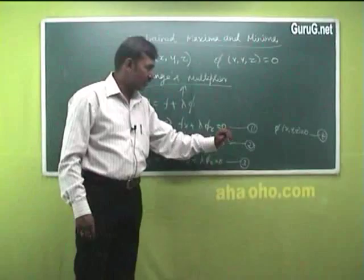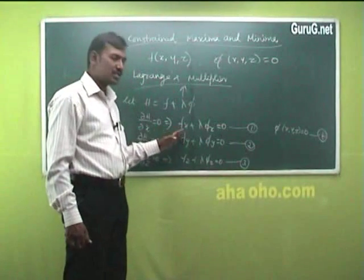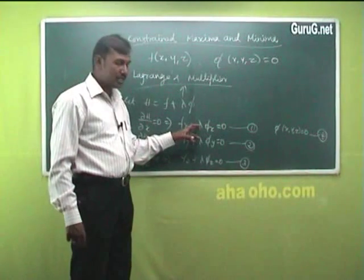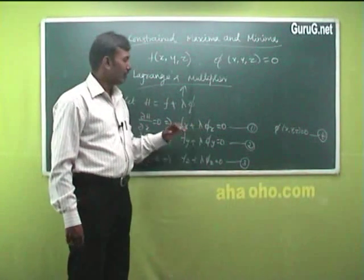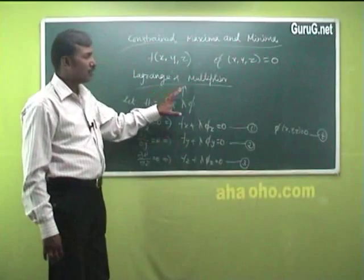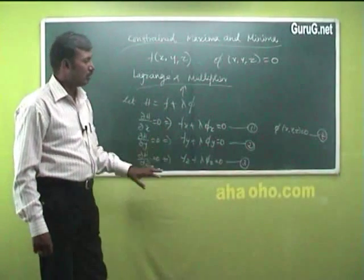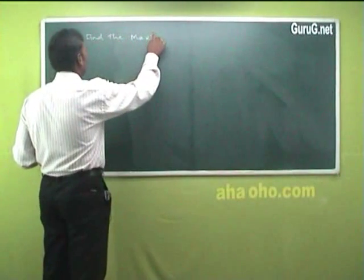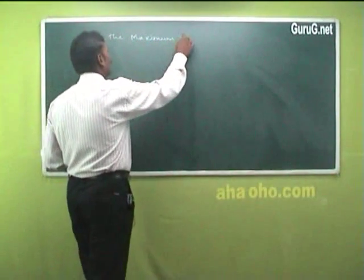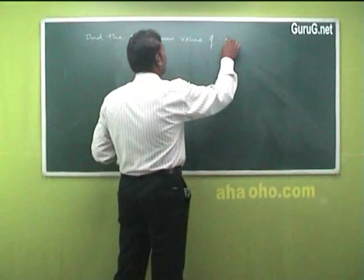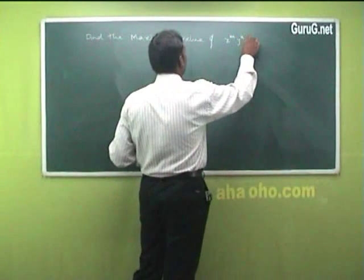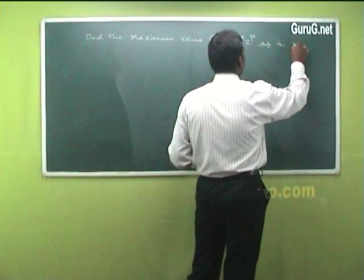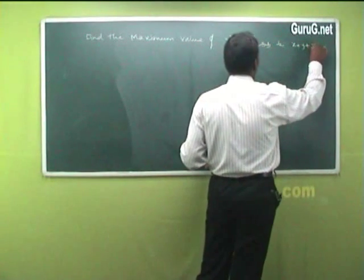Using these four equations, you find out the values of x, y, z, and λ — treating λ as one of the variables. Now we will do one problem so you can understand this. Find the maximum value of x^m · y^n · z^p subject to the condition x + y + z = a.